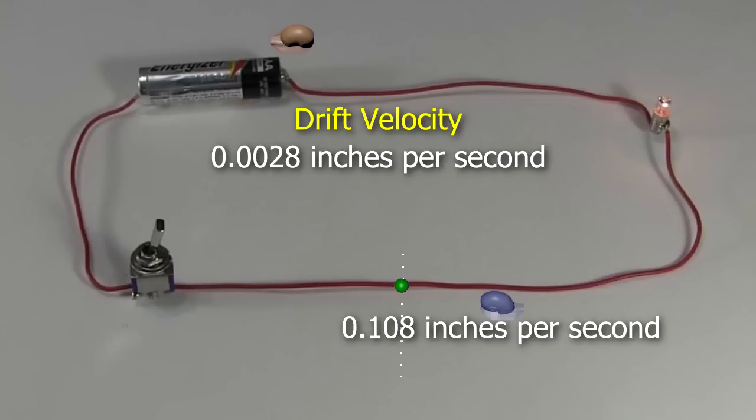Remember our slowest snail, Archie, goes 0.108 inches per second, 38 times as fast as the electron.